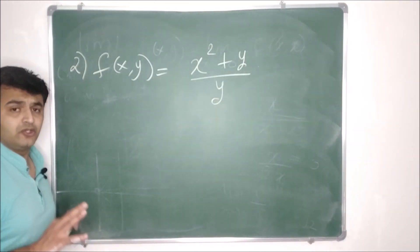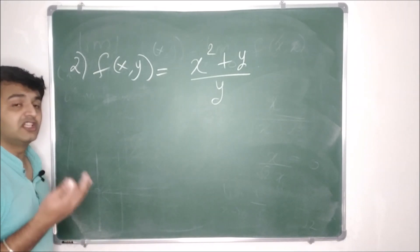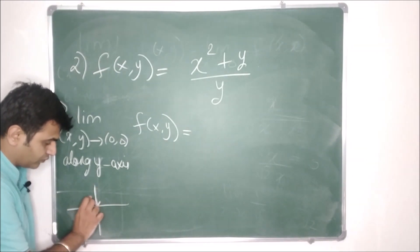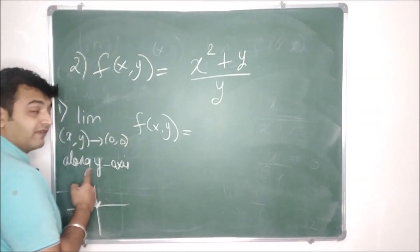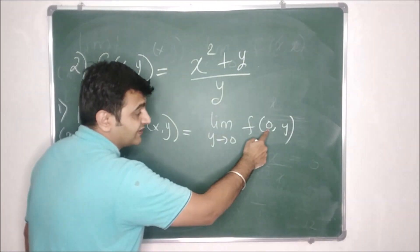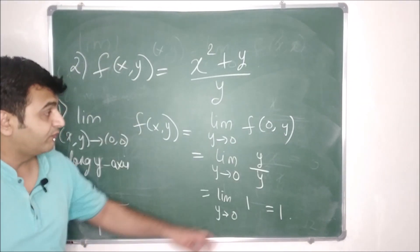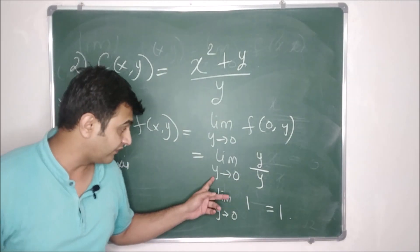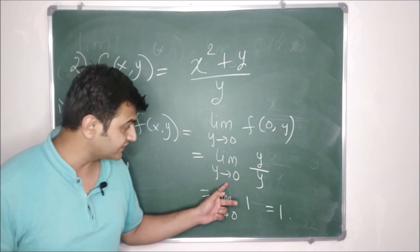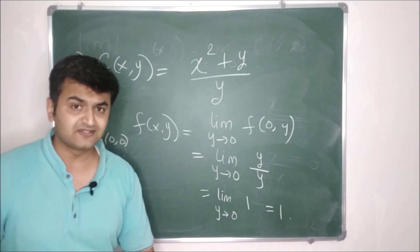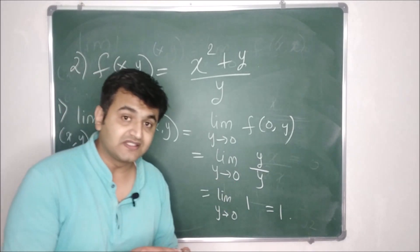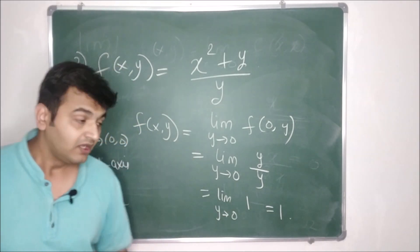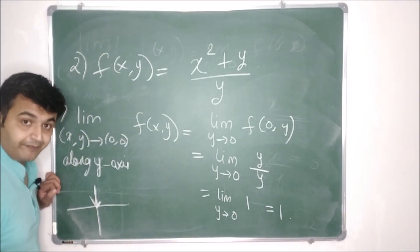Let's look at the second example. We need to show the limit as (x, y) → (0, 0) does not exist. First, approach through the y-axis, meaning x = 0. Substituting x = 0, the function becomes y/y. Since y is approaching 0 but not equal to 0, we can cancel y/y to get 1, so the limit along the y-axis is 1.